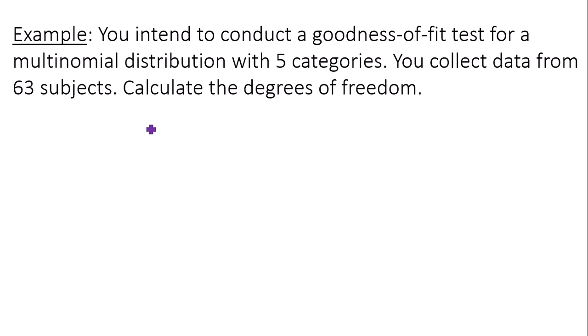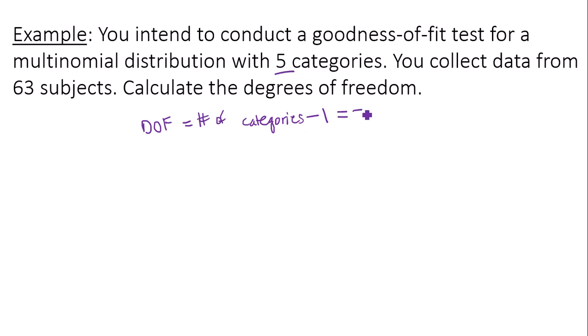The degrees of freedom for a goodness of fit test is always the number of categories minus one. So in this case, they told us that there are five categories. Take away one, we get four degrees of freedom. That's how you find degrees of freedom for a goodness of fit test.